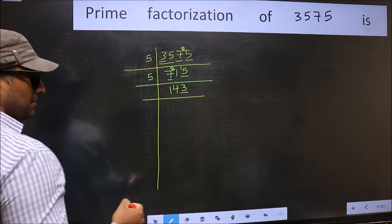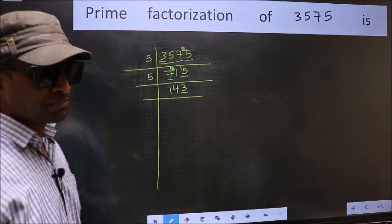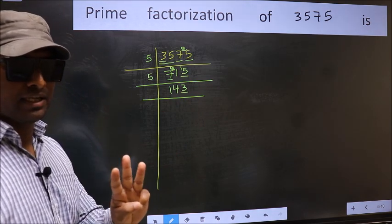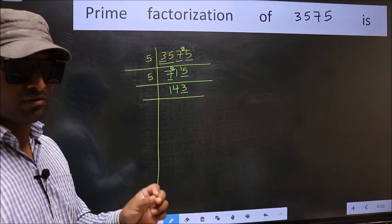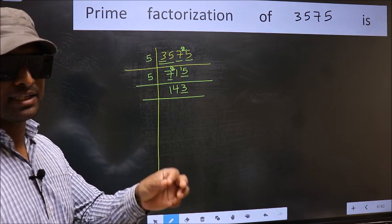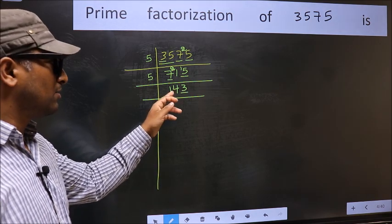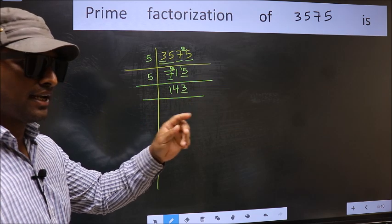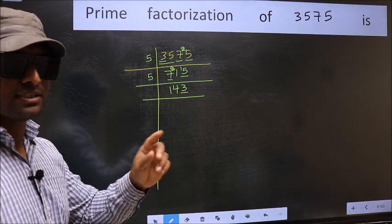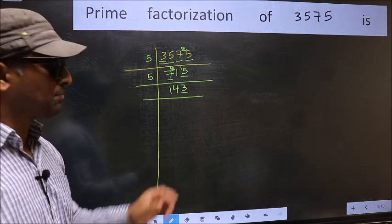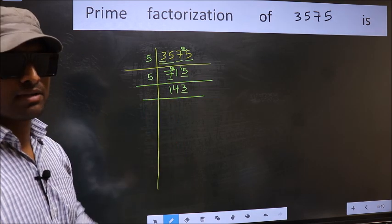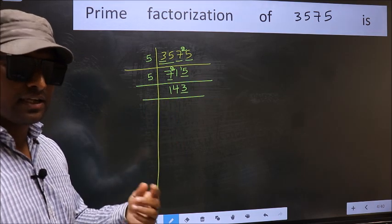Now the last digit 3 is not even, so this is not divisible by 2. Next, prime number 3. To check divisibility by 3, we should add the digits. What I mean is 1 plus 4 plus 3. We get 8, and 8 is not divisible by 3. So this number is also not divisible by 3.